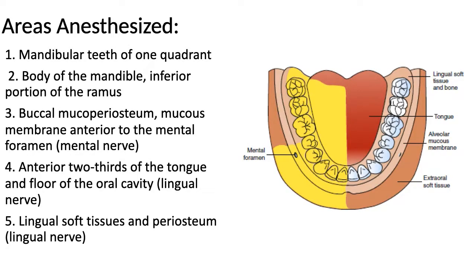The areas anesthetized by this nerve block include the mandibular teeth that are present in that quadrant. The body of the mandible and inferior portion of the ramus are also anesthetized. The buccal mucoperiosteum and the mucous membrane anterior to the mental foramen are also anesthetized.